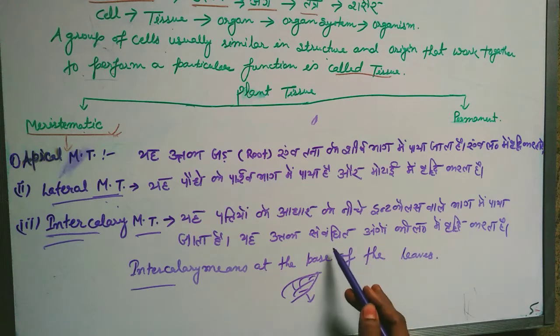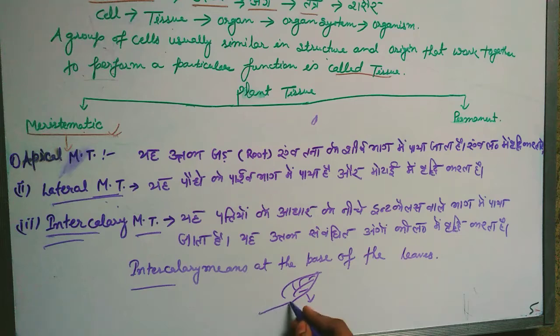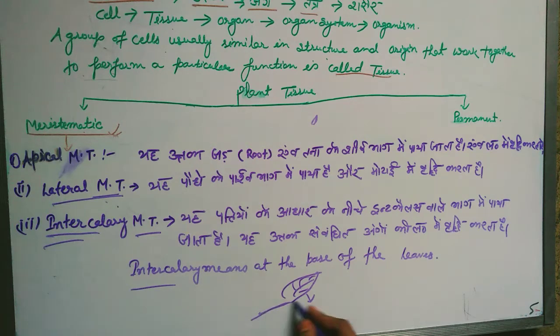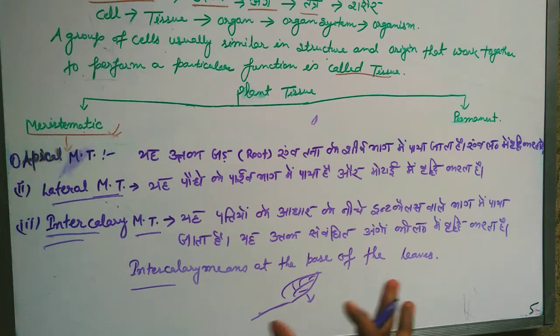Intercalary Meristematic Tissue is found at the nodes and inter-nodes of the plant. The nodes and inter-nodes work with this tissue.